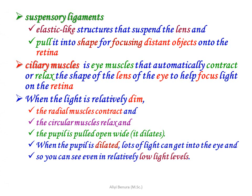Suspensory ligaments are elastic-like structures that suspend the lens and pull it into shape for focusing distant objects onto the retina. Ciliary muscles are muscles that automatically contract and relax to change the shape of the lens to help focus light on the retina. When light is relatively dim, the radial muscles contract, the circular muscles relax, and the pupil is pulled open wide, allowing a lot of light into the eye so you can see in relatively low light levels.